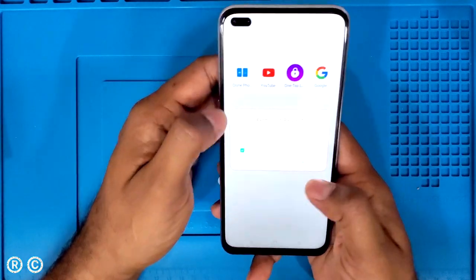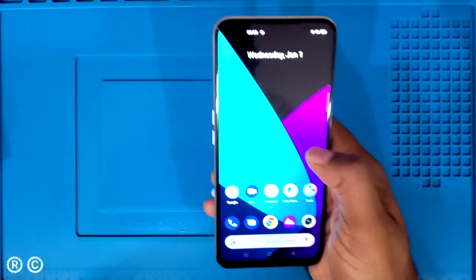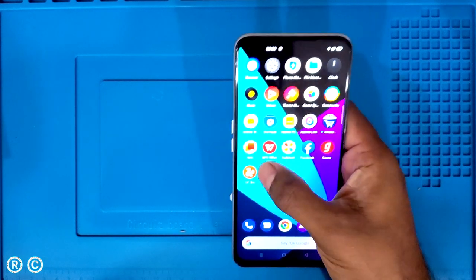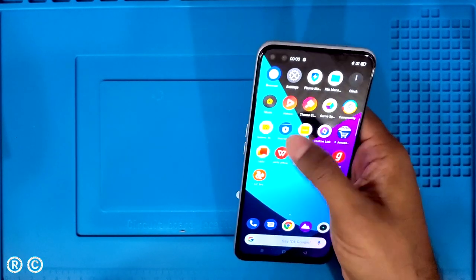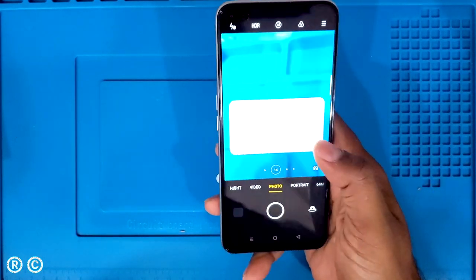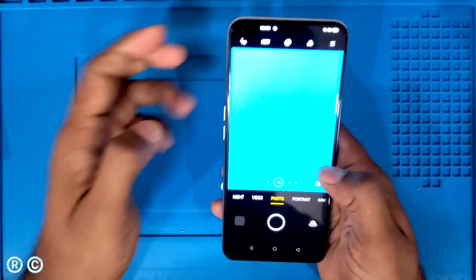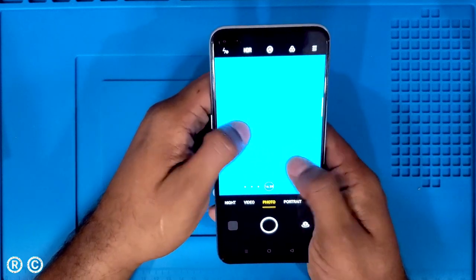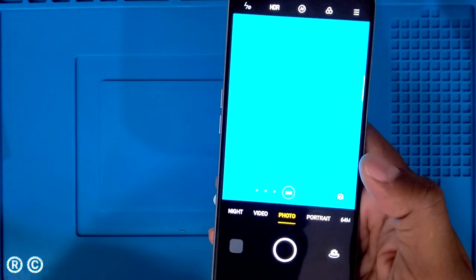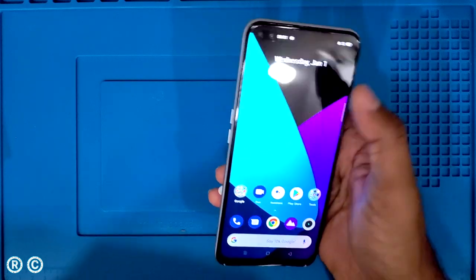After finishing the setup, I notice some notifications and Chinese apps like the browser installed by default. Looking at the camera, it has 5x zoom and you can go up to 20x hybrid zoom, though I don't think pictures at 20x are very useful.